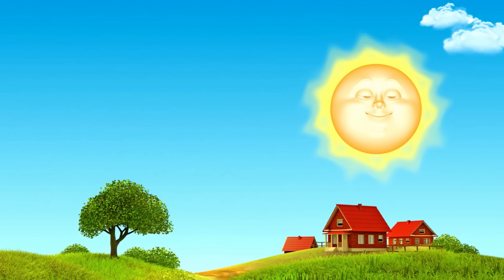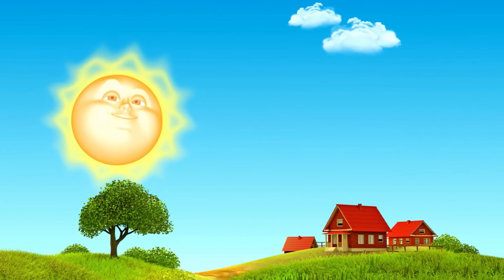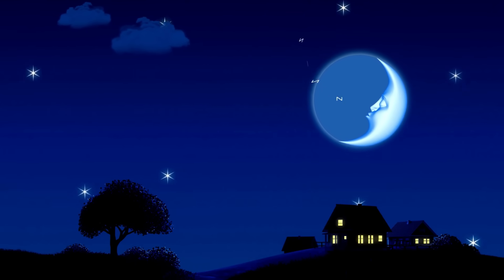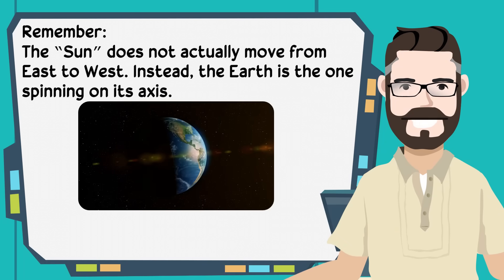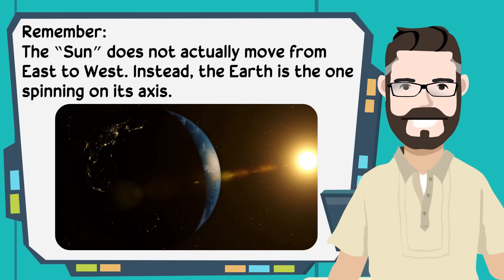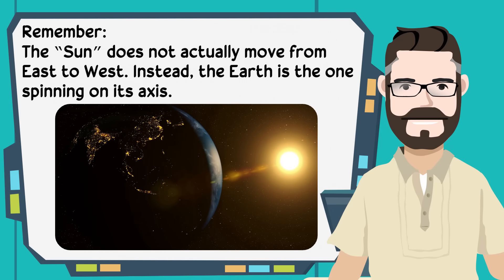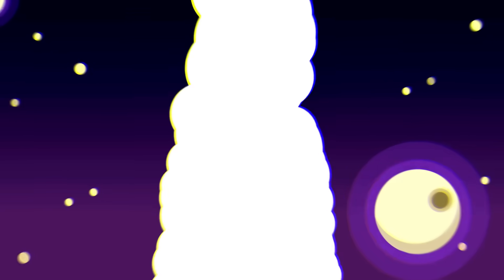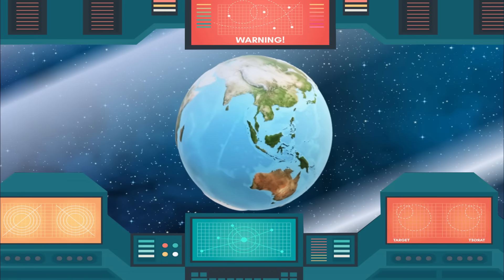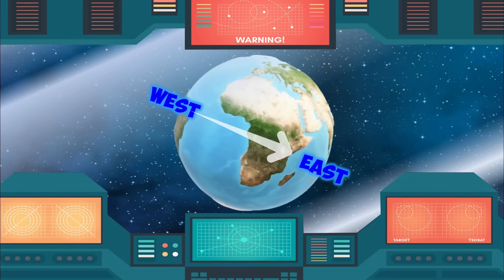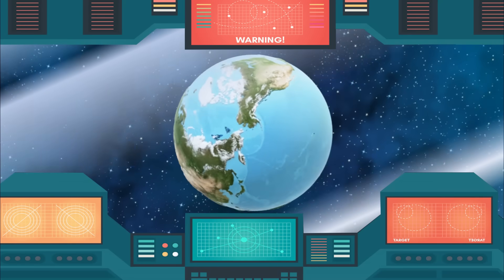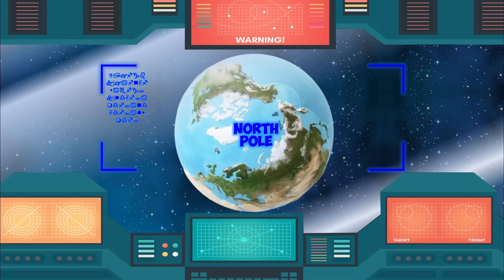Every day, the Sun appears to rise in the east, then travels across the sky and sets in the west. You can observe this day in and day out. But did you know that the Sun does not actually move from east to west? Instead, the Earth is the one spinning on its axis. The Earth rotates or spins from west to east.